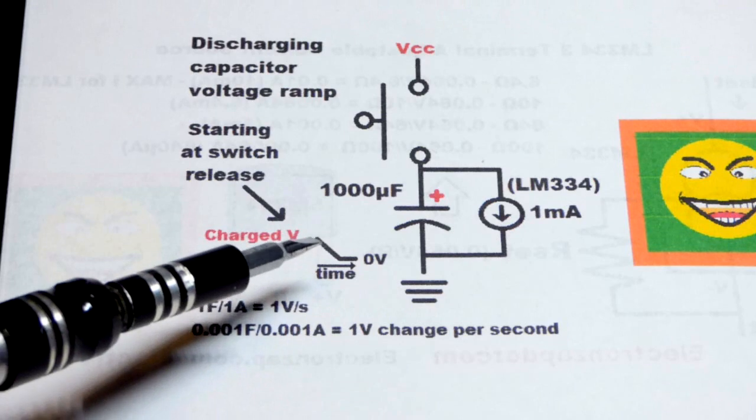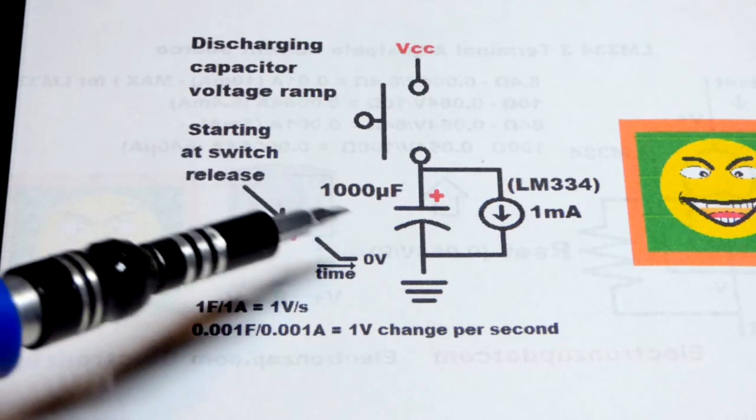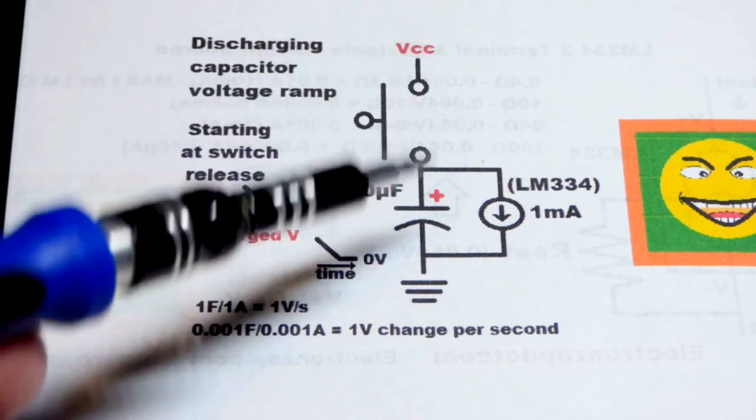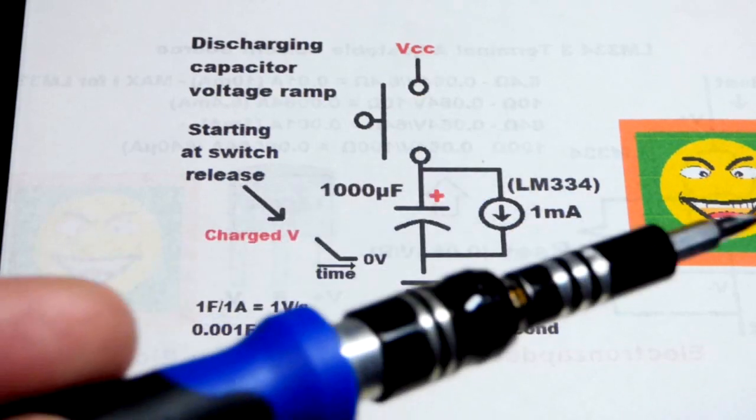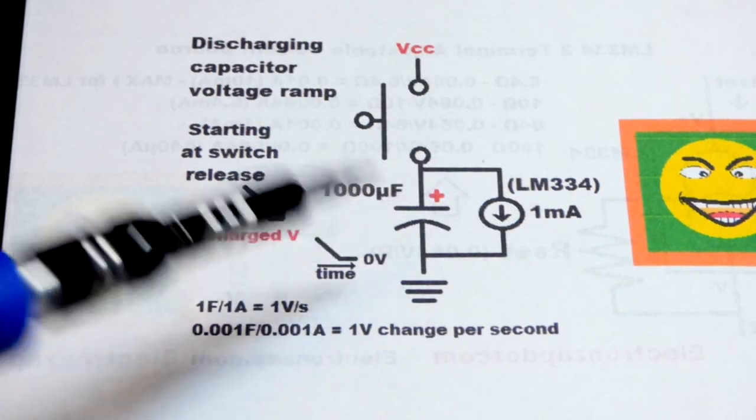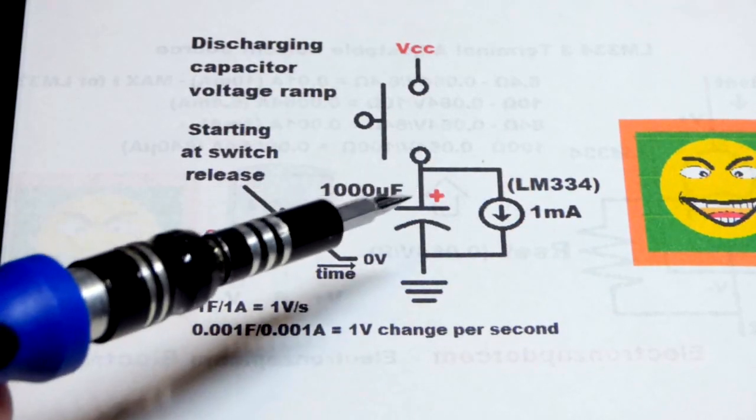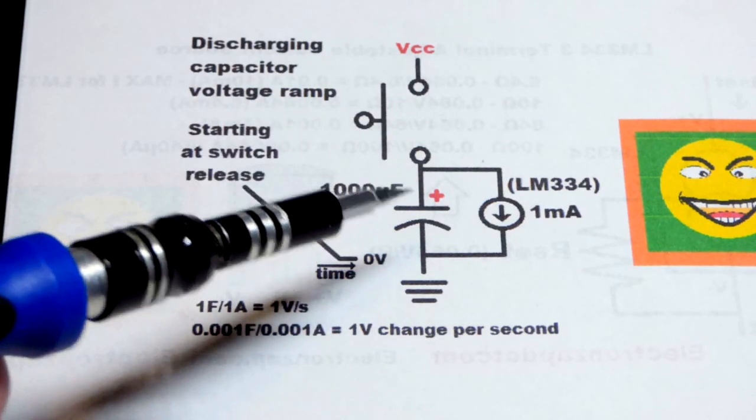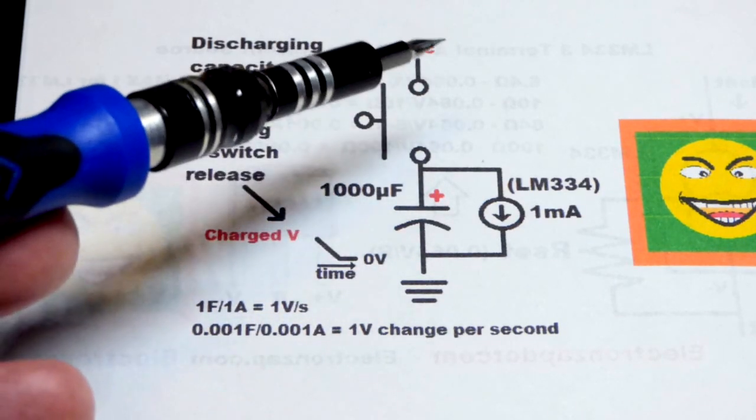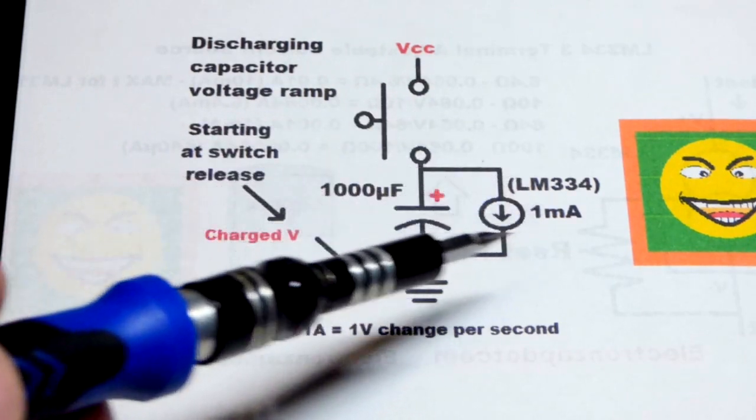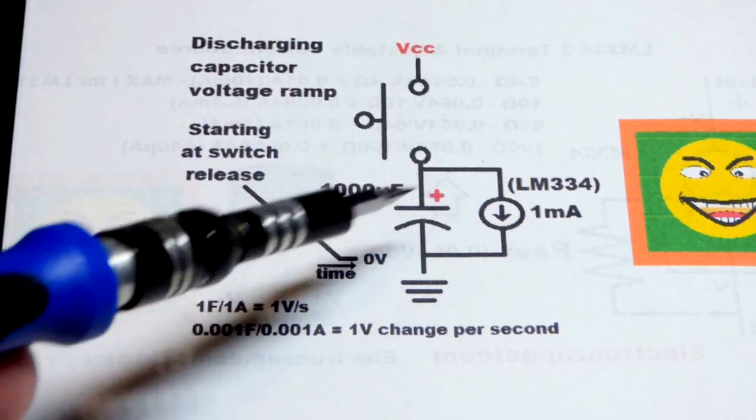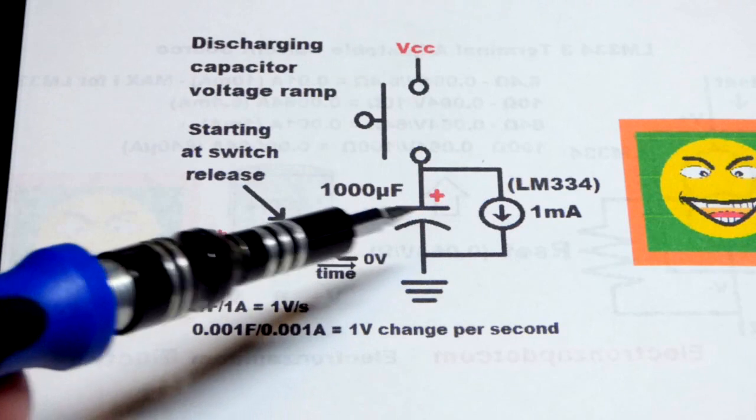While we're looking at the voltage with the oscilloscope, when I press the switch, the capacitor will instantly charge as long as we have enough current from the power supply. When the switch is pressed, current will also start going through the current source, but the capacitor will be fully charged.